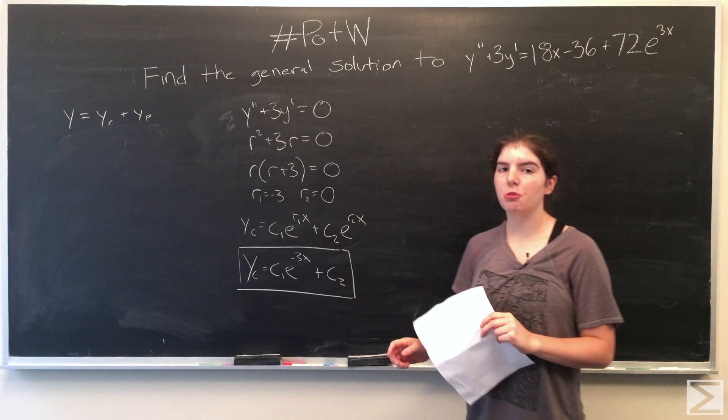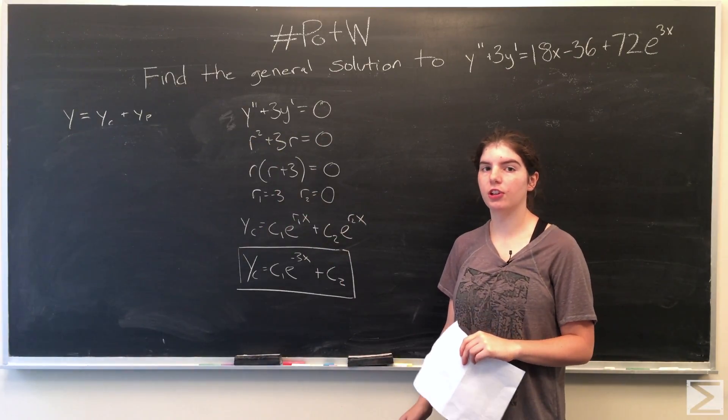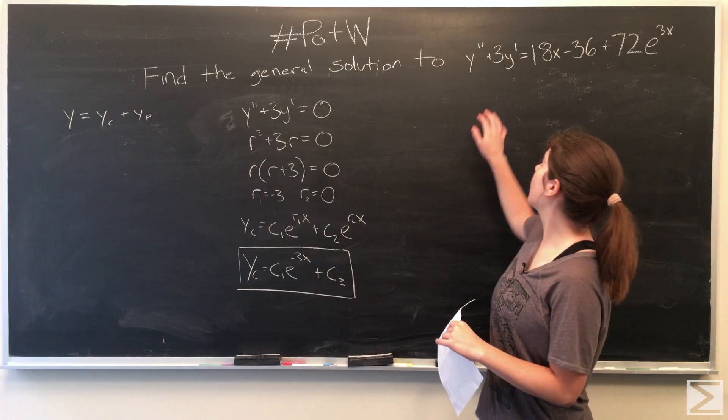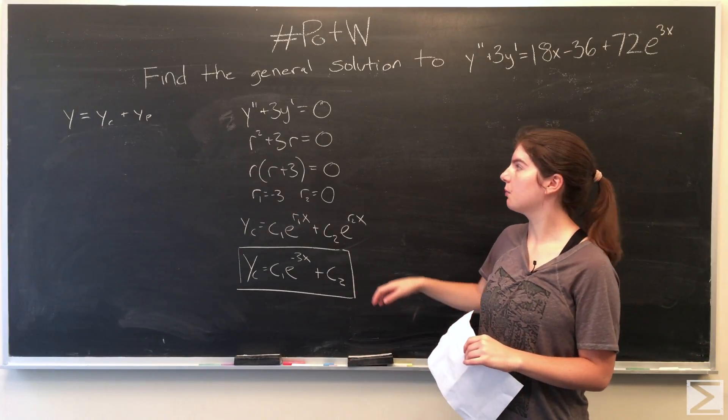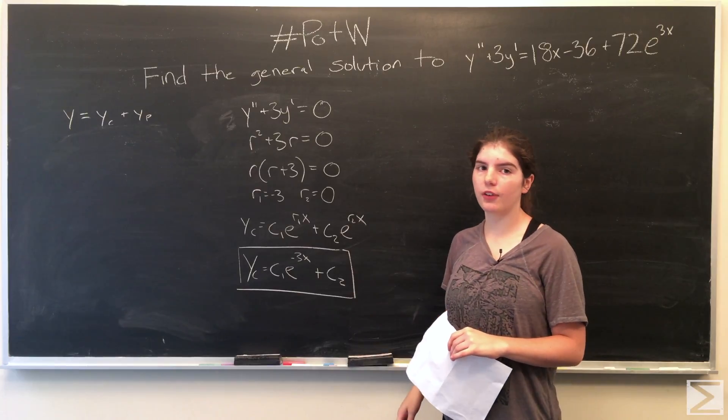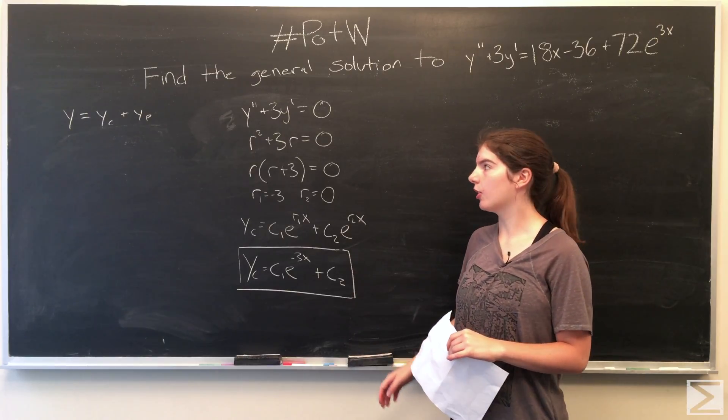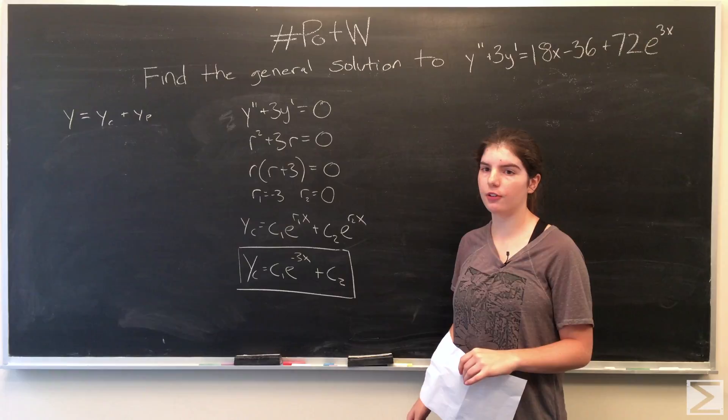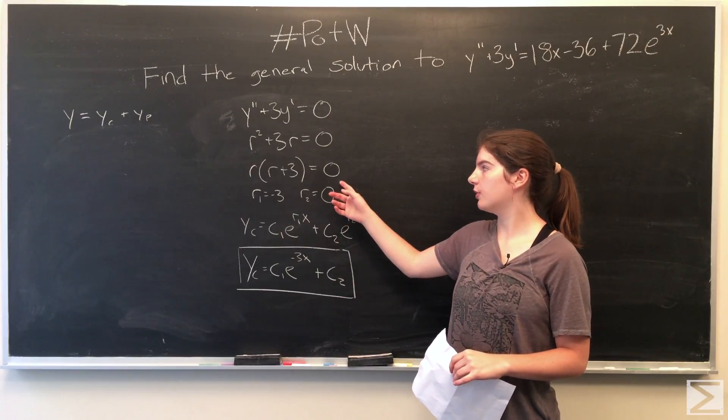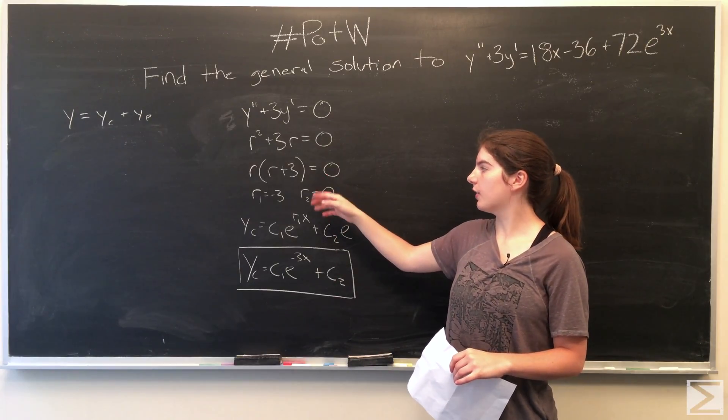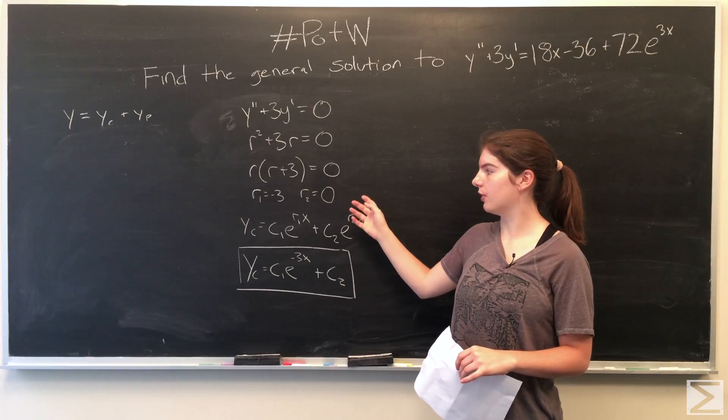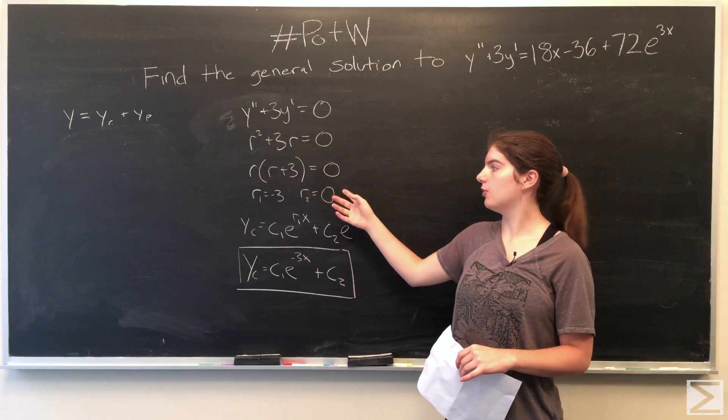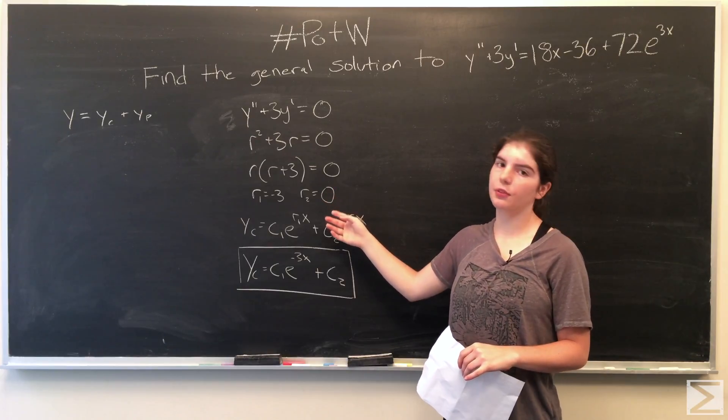You find the complementary solution by solving the associated homogeneous equation. So you set y double prime plus 3y prime equal to 0, and then you can find the characteristic equation: r squared plus 3r equals 0. When you factor out an r, you get r times r plus 3 equals 0, which gives you roots of negative 3 and 0.